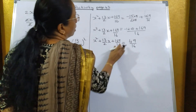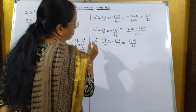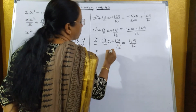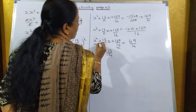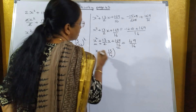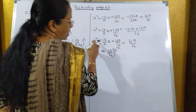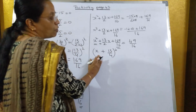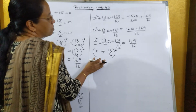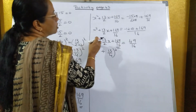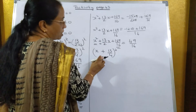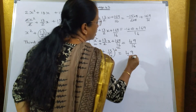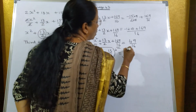Now take the square root on both sides. The left side is x plus 13 upon 4, the whole square — using the formula a² plus 2ab plus b² — so x² plus 13 upon 2 x plus 169 upon 16 equals x plus 13 upon 4, the whole square. This is equal to 49 upon 16.